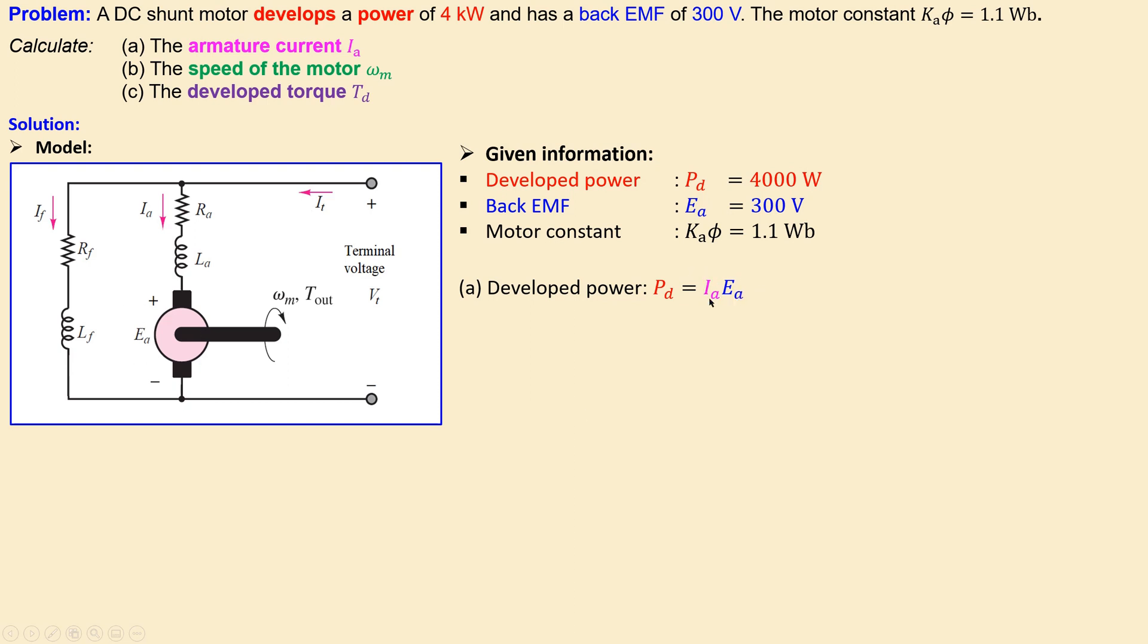Now since I know that I want the armature current, I can rewrite this in this form such that I have P_d over the back EMF. So I can just substitute the values, I will get 13.3 amperes and this will be our armature current. That's for question a.